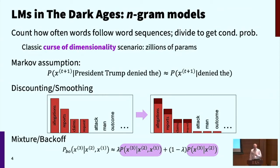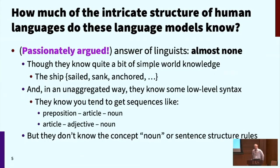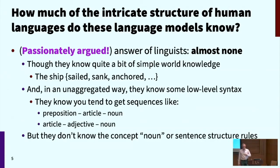This introduces the question of how these models relate to linguistic theory — the structure of language that people think about in linguistics. The answer for about 30 years, often passionately argued by linguists, has been that these models in no way capture the intricate, rich structure of human languages. They know a bit in some disaggregated way — they capture the fact that you tend to get word sequences like preposition, article, noun, article, adjective, noun. But that's mixed together with a lot of world knowledge of what kinds of things ships or students do. They don't have any abstraction; they don't capture concepts like parts of speech — nouns and verbs — let alone more of the grammar of the structure of a human language.